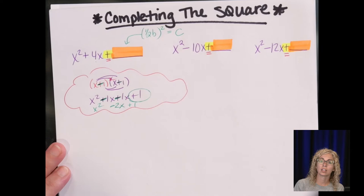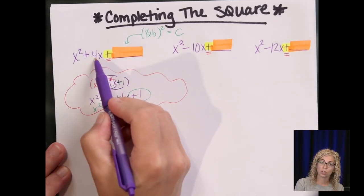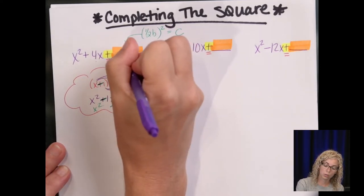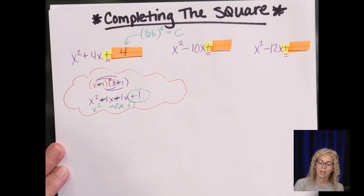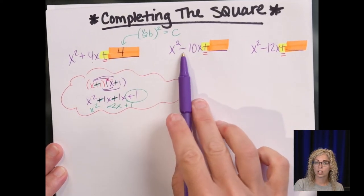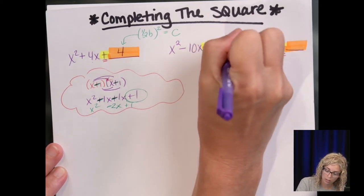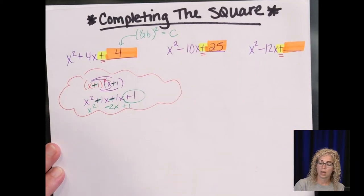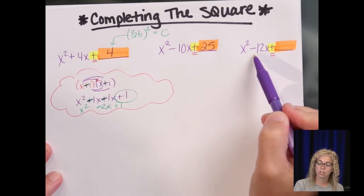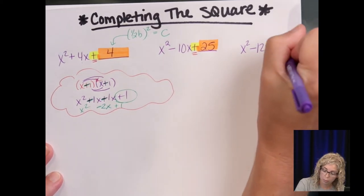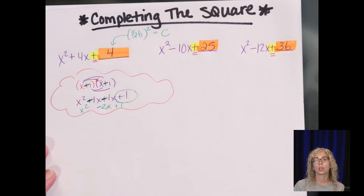Half of 4 is 2, and then 2 squared, or 2 times 2, is 4. Half of 10, or negative 10, is negative 5, and when you square negative 5, you get positive 25. Half of negative 12 is negative 6, and negative 6 squared is positive 36. So we just completed the square.